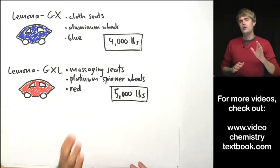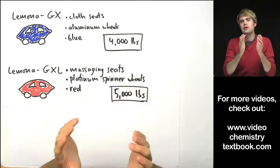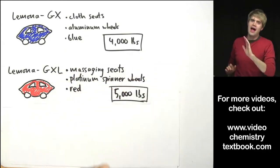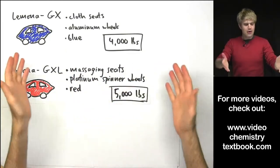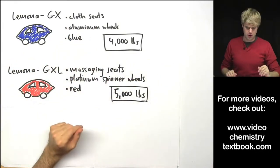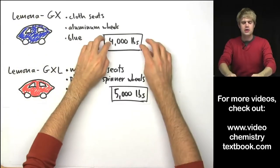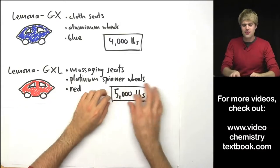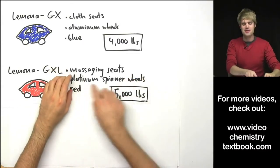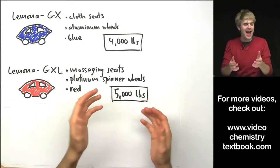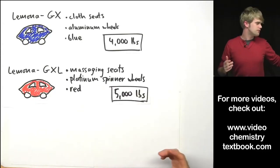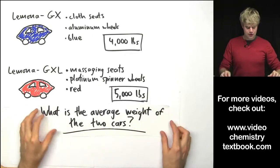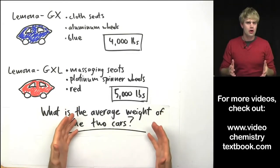Anyway, we said that atomic mass is going to have a lot to do with the idea of averages. So let's think about averages for these two cars. The Lamona GX weighs 4,000 pounds whereas the Lamona GXL weighs 5,000 pounds. It's probably these platinum spinner wheels that really add to that heft. So let's say you have this question. What is the average weight of the two cars?